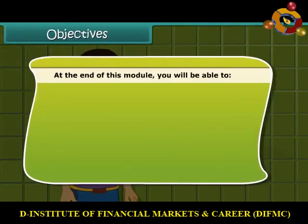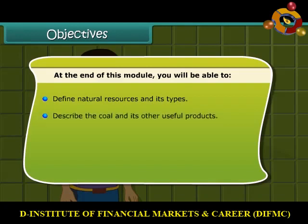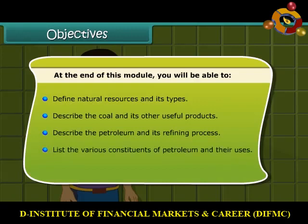At the end of this module, you will be able to: define natural resources and its types; describe the coal and its other useful products; describe petroleum and its refining process; list the various constituents of petroleum and their uses; and describe the natural gas and its importance.